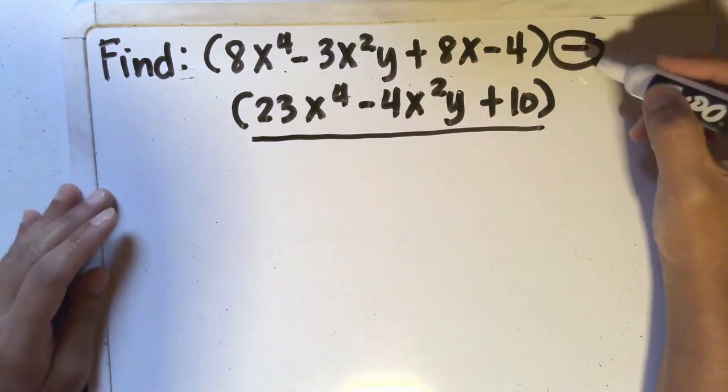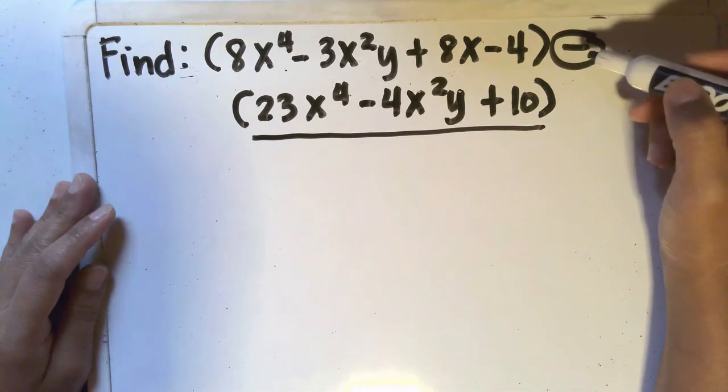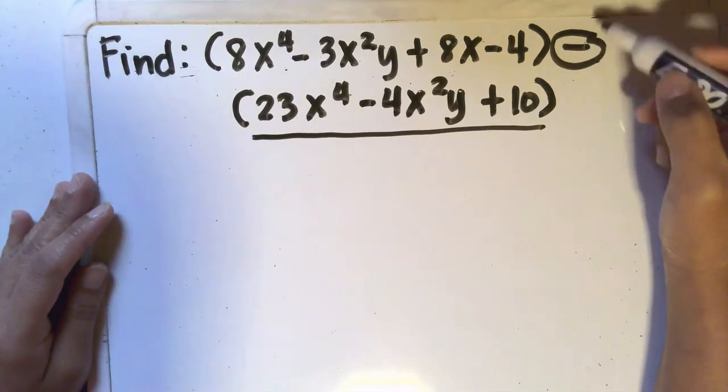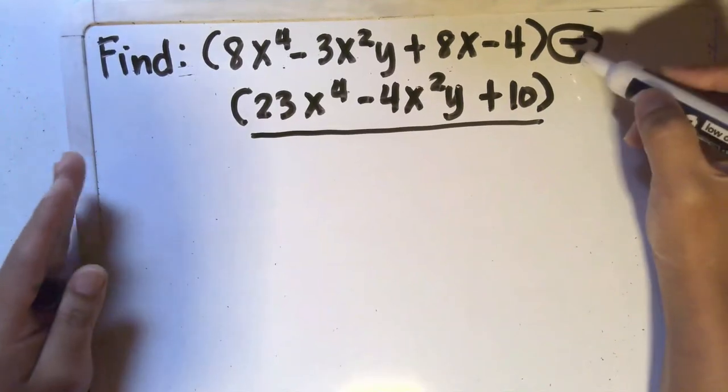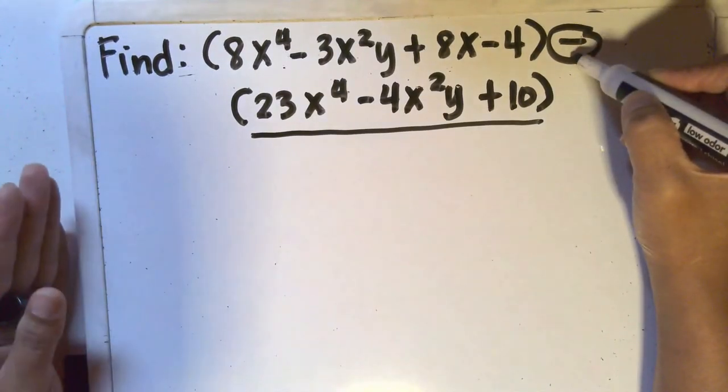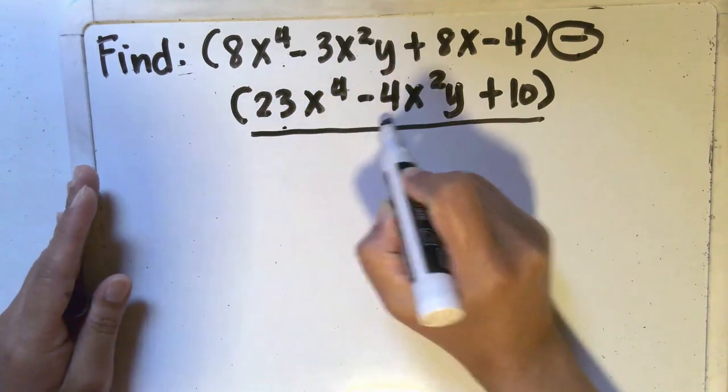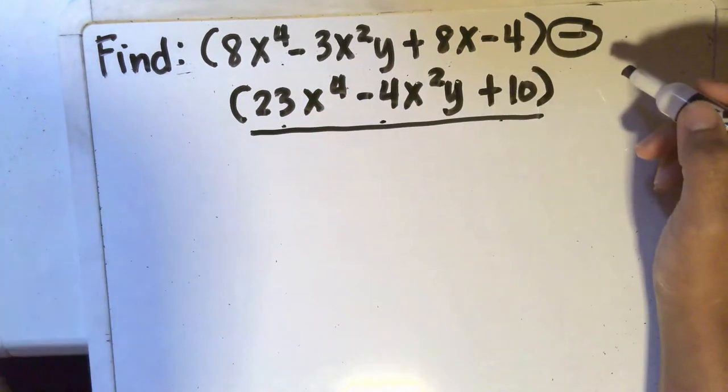So remember that when you do that, you can actually change this problem into an addition expression problem by changing this to a plus sign and changing the sign of each of the terms in the second expression into its opposite.